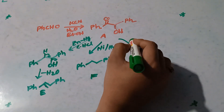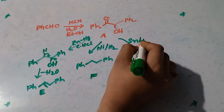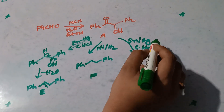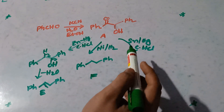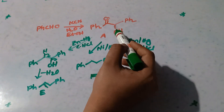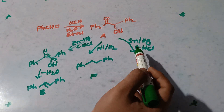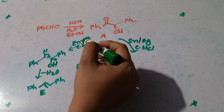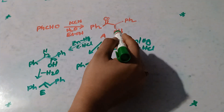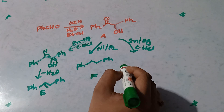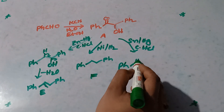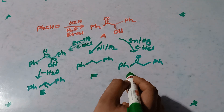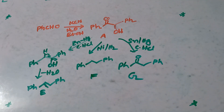The next reagent is Sn(Hg) — tin amalgam — and concentrated HCl. This is similar to Clemmensen reduction and also acts as a deoxygenating agent, meaning oxygen is removed. But here, specifically the alcohol oxygen is removed, so hydrogen attaches to that carbon. Our product is Ph-C(=O)-CH2-Ph. This is our final compound G.